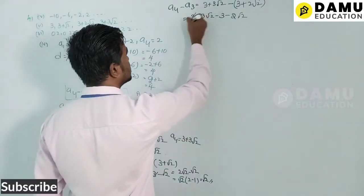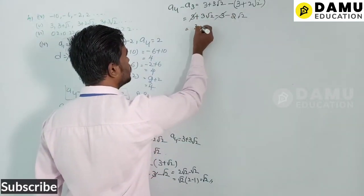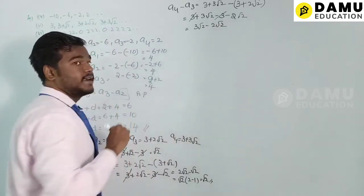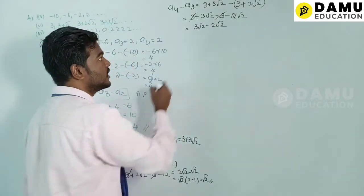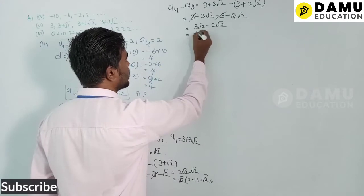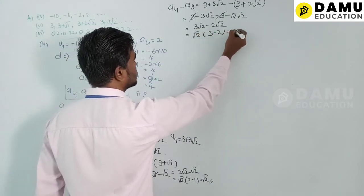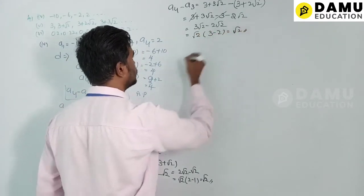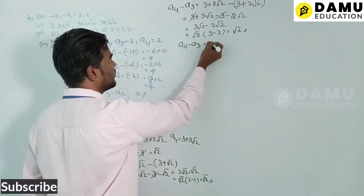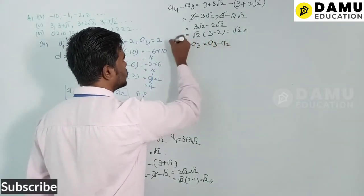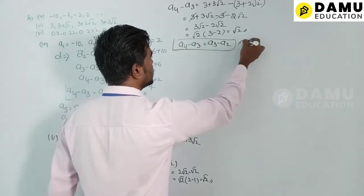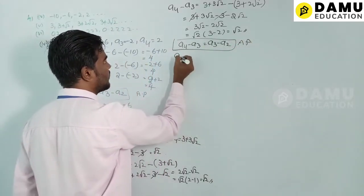The 3's cancel. Taking √2 as common: (3 − 2)√2 = √2. So a4 − a3 = a3 − a2 = √2. The series is in arithmetic progression.